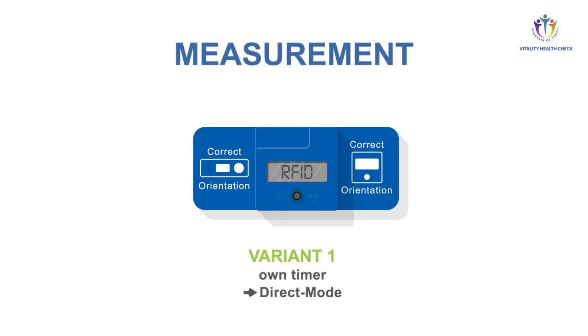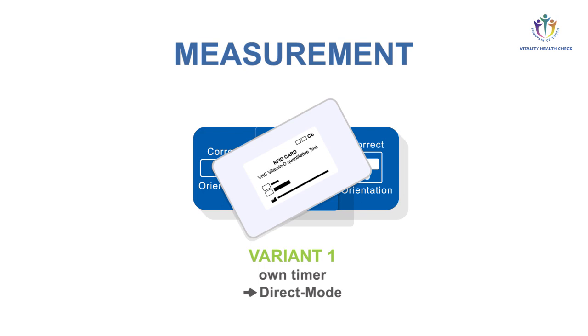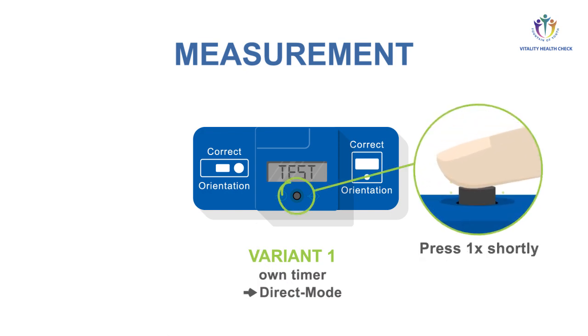Make sure the lot numbers of RFID card and test cassette are matching. Place the RFID card on top of the VHC reader. A beep tone confirms the data transfer was successful. The display shows test. Press the button again shortly.